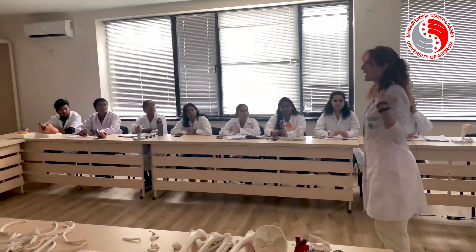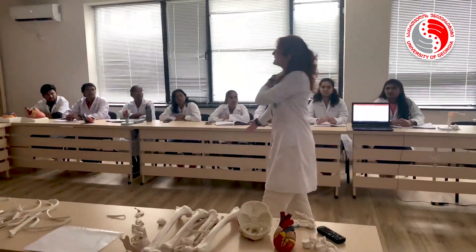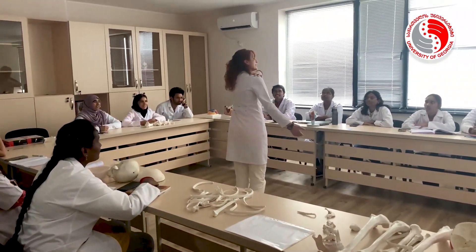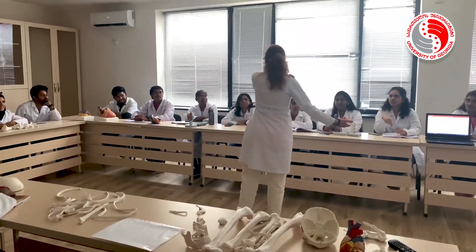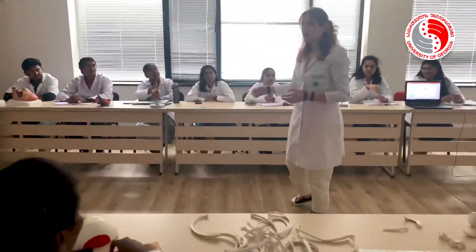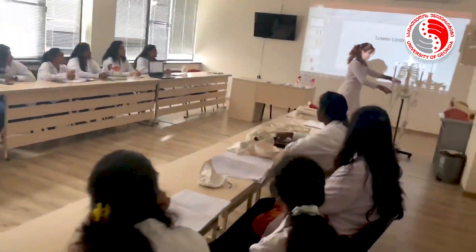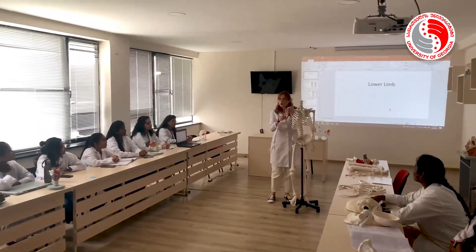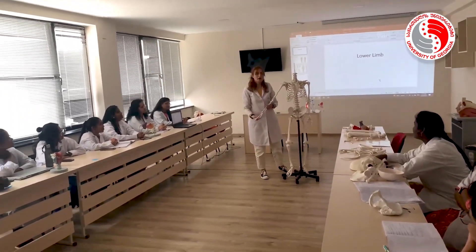Guys, remind me please — the upper limb is divided into how many regions? Three regions? Four regions. Yes. Okay, one by one please. So once again, our upper limb is divided into four regions. Such as: the shoulder, which connects the upper limb to the trunk; then we have the arm; then we have the forearm. Okay, thank you so much.